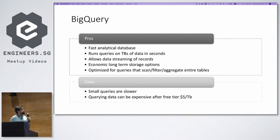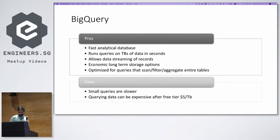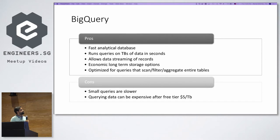We bumped into BigQuery and found it might be the right fit, because it allows fast analytical queries and we needed a backend where we could run many queries and churn out insights. It can run queries on terabytes of data in seconds, and allows you to stream data — you don't have to create batch jobs to insert data; you can stream data into BigQuery quite easily. It's also economical for long-term storage, though smaller queries won't run as fast as expected and querying data can be expensive.